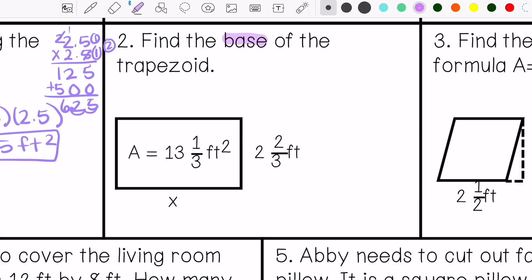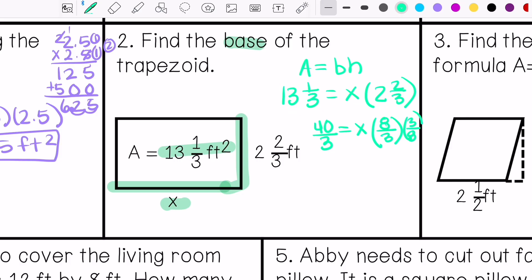Alright, this one says to find the base, so I don't know the base. The base is x, and my height is 2 2/3. My area is 13 1/3, so area equals base times height. I know that 13 1/3 is the area. Don't know the base. The height is 2 2/3. I am going to convert these into improper fractions and then solve like a one-step equation. So my base is 5 feet.